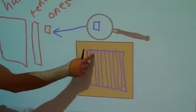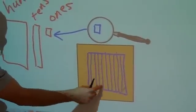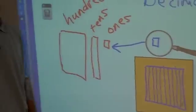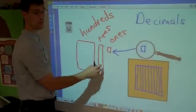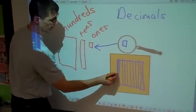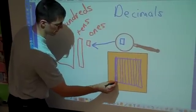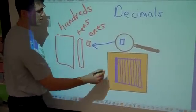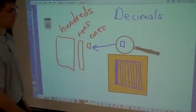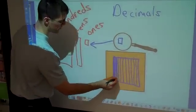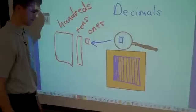Each of these bars stands for one out of ten parts of just a one. If I fill in one of them, I could read this as one tenth of a one. If I filled in two, I would have two tenths.